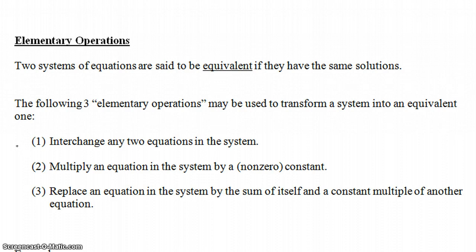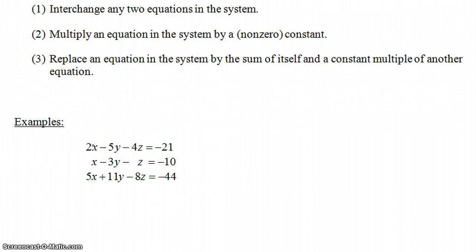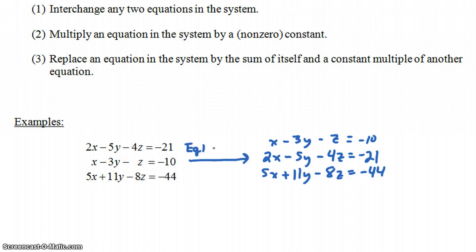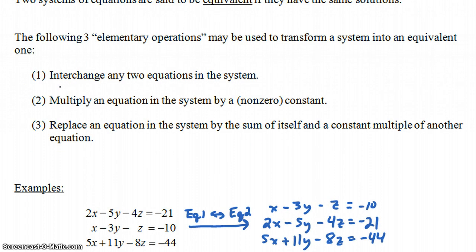There are three elementary operations that can be used to transform a system of equations into an equivalent one. The first is you can always interchange any two equations in the system. For example, I could write the middle equation on top — x minus 3y minus z equals negative 10 — and put the top equation in the middle, keeping the third the same. Interchanging the first and second equations does not affect the solution. I write this as eq1 ↔ eq2.